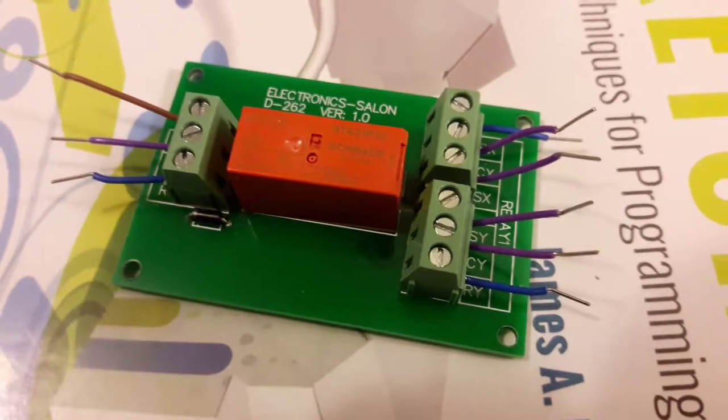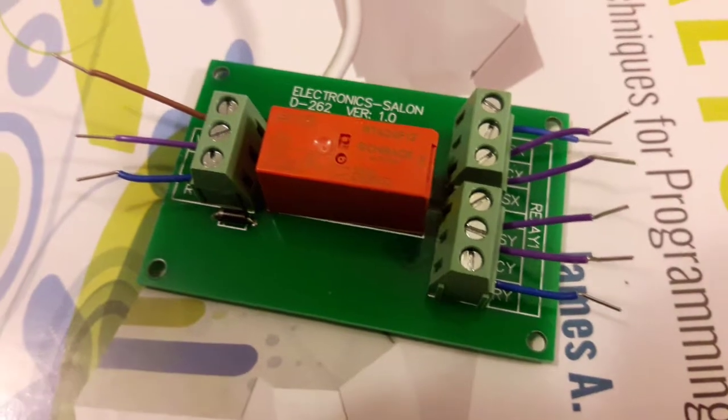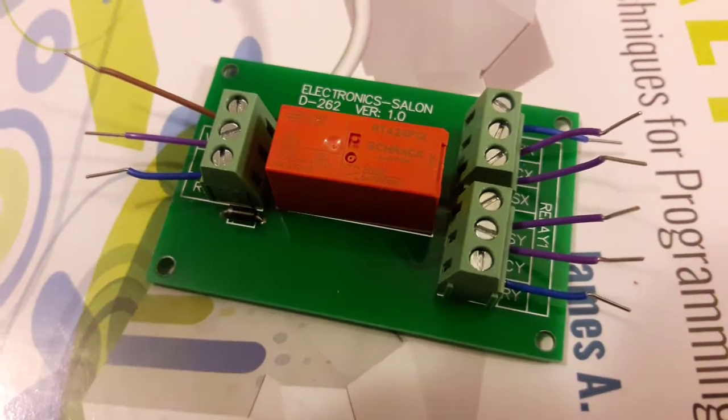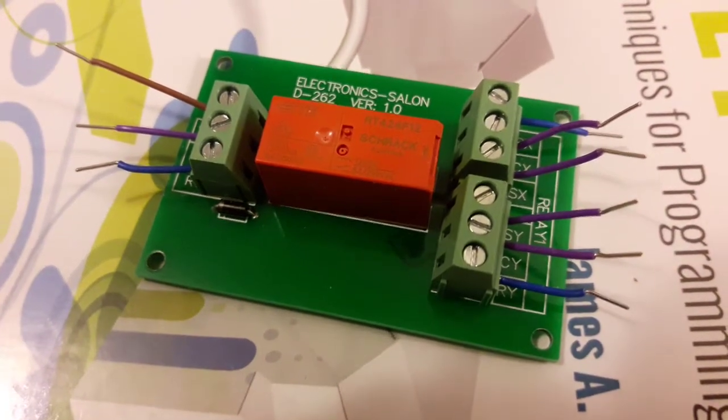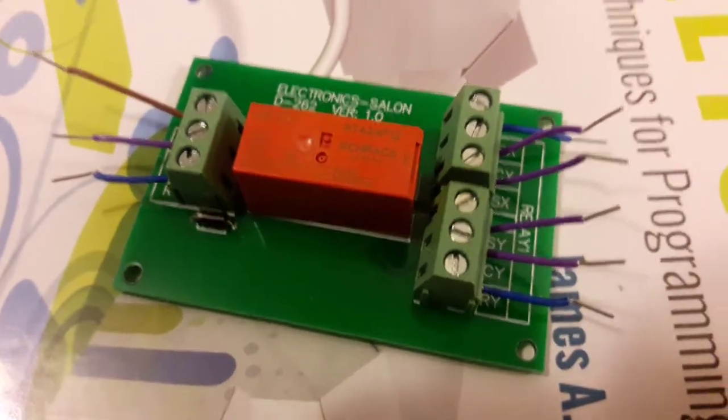Just making a record of the progress on the high miles per gallon project. What you're looking at is a latching relay that I got on Amazon for about seventeen dollars.